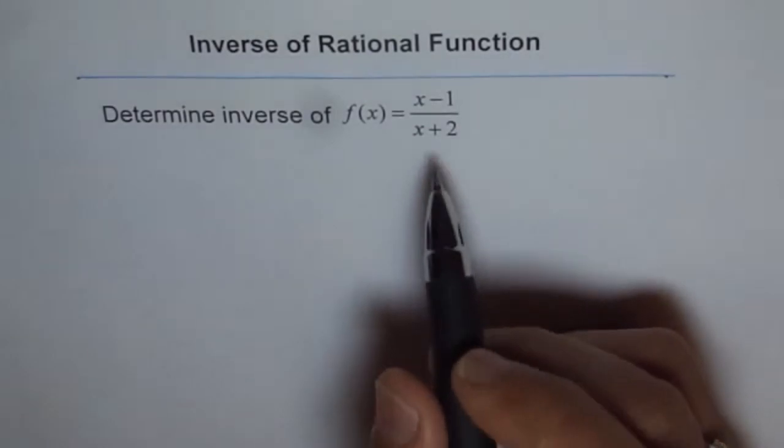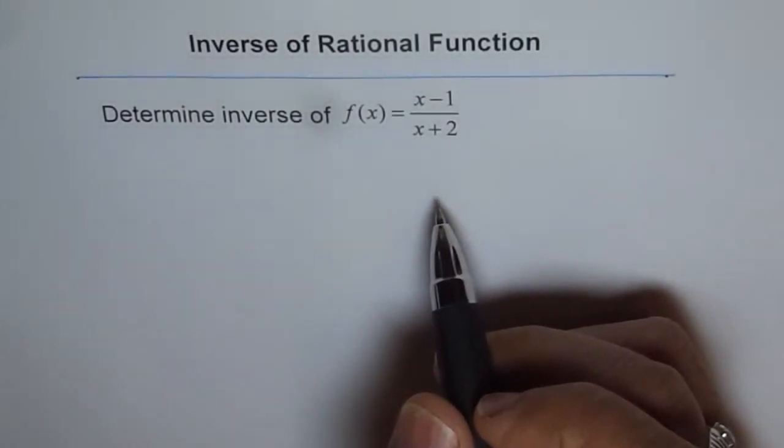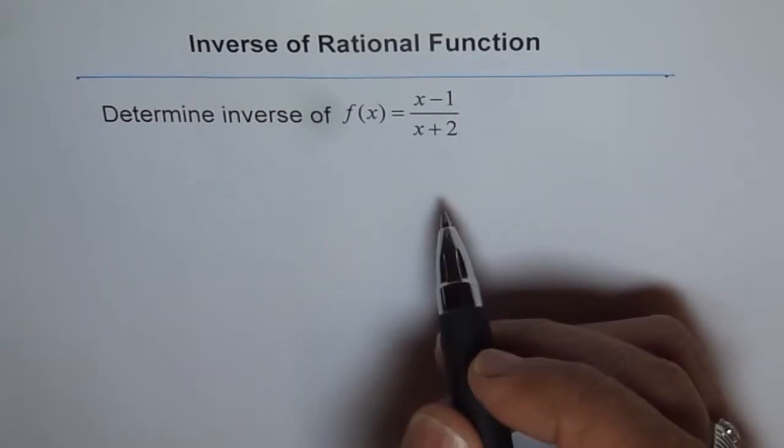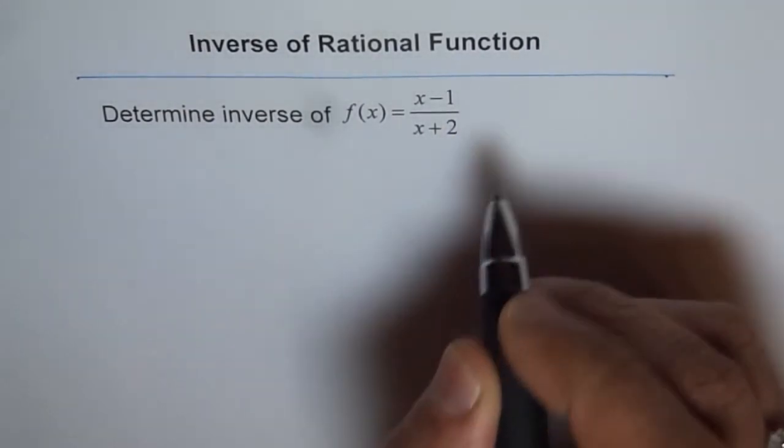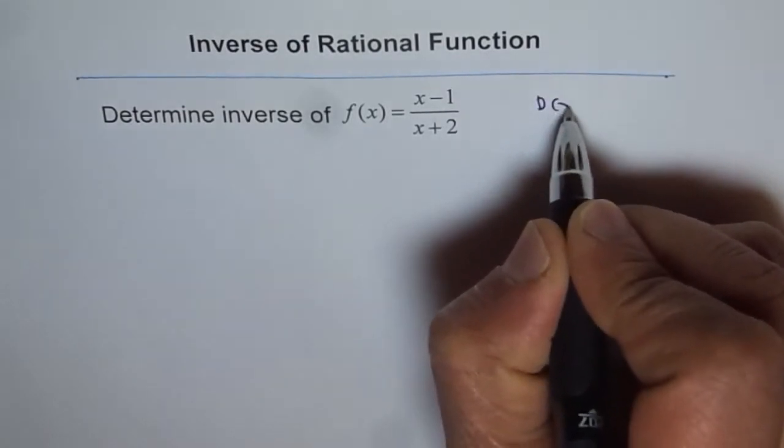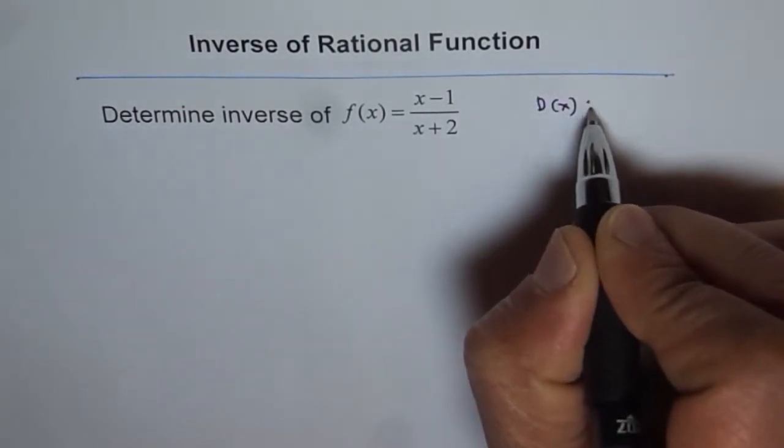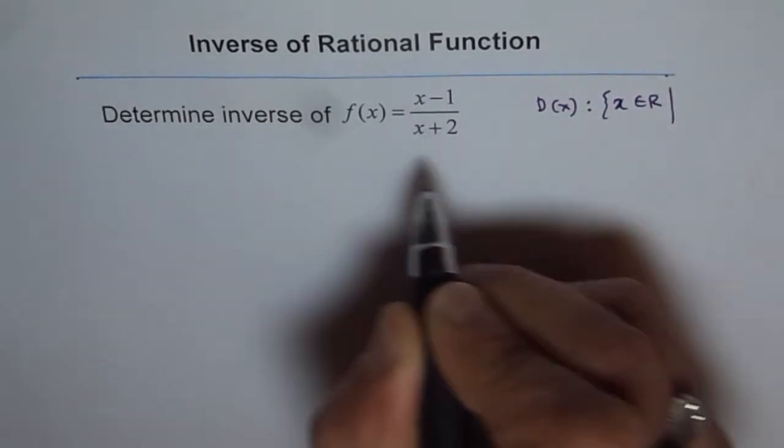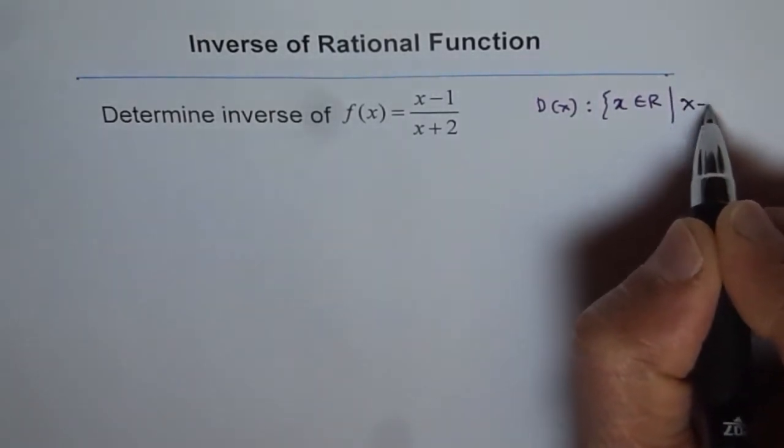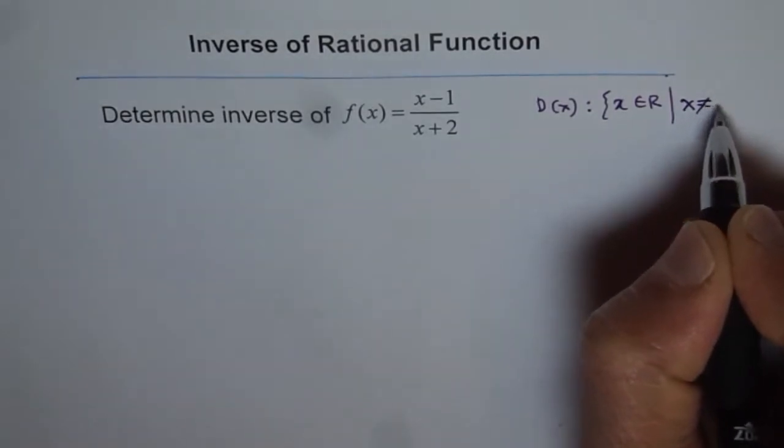My suggestion is that whenever you have a rational function or a function with a restriction, it's a good idea to write its domain and range. Now here you can see that the domain of the function is x belongs to real numbers but x cannot be minus 2, x is not equal to minus 2.